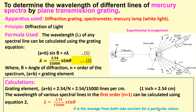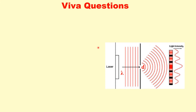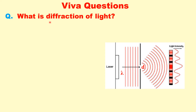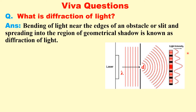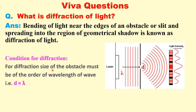The first question is: what is the diffraction of light? It is the bending of light near the edges of an obstacle or slit, and it spreads into the region of geometrical shadow. Where there should be a shadow in the central region, we instead get fringes or a pattern — this is known as diffraction. The condition for diffraction is that the size of the obstacle or slit D should be equivalent to the order of the wavelength λ.